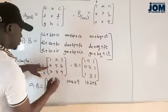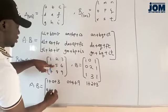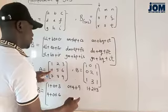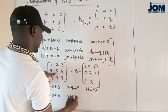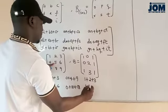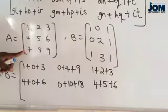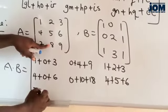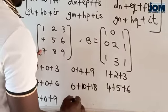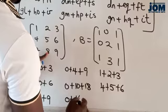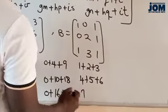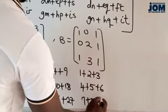Now we go to the second row: 4 multiplies 1 which is 4, plus 5 multiplies 0 which is 0, plus 6 multiplies 1 which is 6. And we go to the second column: 4 multiplies 0 which is 0, plus 5 multiplies 2 which is 10, plus 6 multiplies 3 which is 18. And we go to the third column: 4 multiply 1 which is 4, 5 multiply 1 which is 5, 6 multiply 1 which is 6. And lastly: 7 multiply 1 which is 7, plus 8 multiplied by 0 which is 0, plus 9 multiplied by 1 which is 9. And we go to the second column: 7 multiplied by 0 is 0, plus 8 multiplied by 2 is 16, plus 9 multiplied by 3 is 27. And we go to the last column: 7 multiplied by 1 is 7, 8 multiplied by 1 is 8, plus 9 multiplied by 1 is 9.